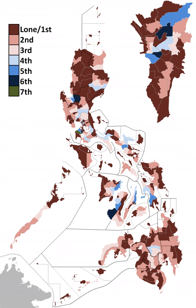From 1916 to 1935, the Philippines was divided into 12 senatorial districts. Each district, except for the 12th senatorial district, elected two senators to the Senate. The senators from the 12th senatorial district were appointed by the U.S. Governor-General. Since 1941, when the Senate was restored, all 24 senators have been elected at large in intervals.